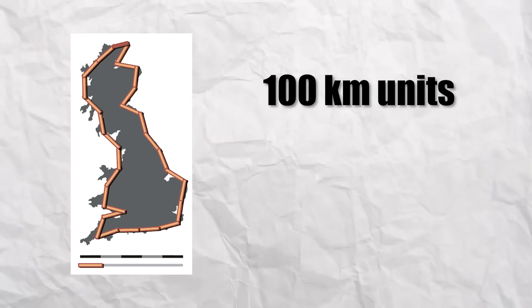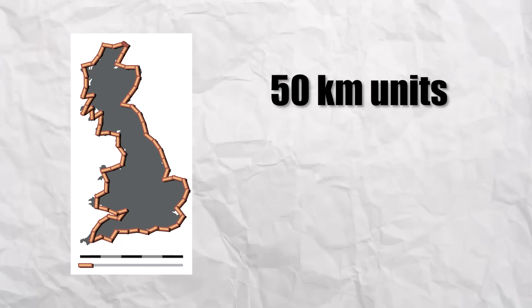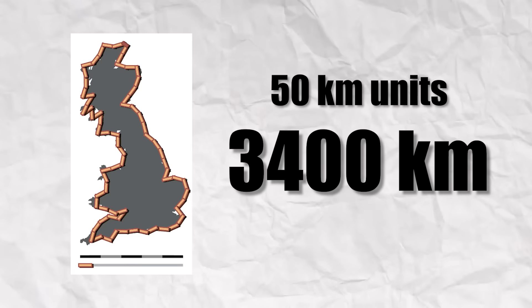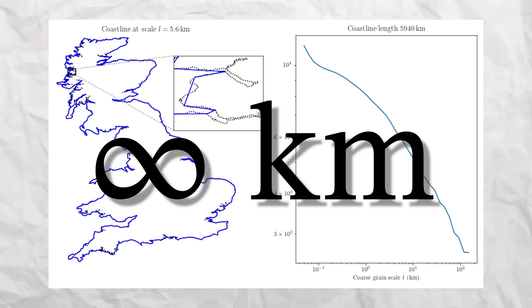So if we use 100 kilometer units, we get about 2,800 kilometers. Enhancing our accuracy to 50 kilometer units, we get 3,400 kilometers. And as our unit of measure gets smaller and smaller, the coastline of Britain tends to infinity. What?